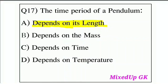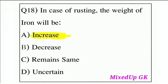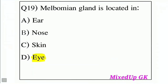Question 18: In case of rusting, the weight of iron will be? Question 19: Malbumian gland is located in — Option A: Ear, Option B: Nose, Option C: Skin, Option D: Eye. The correct answer is Option D: Eye. The Malbumian gland is located in the eye.